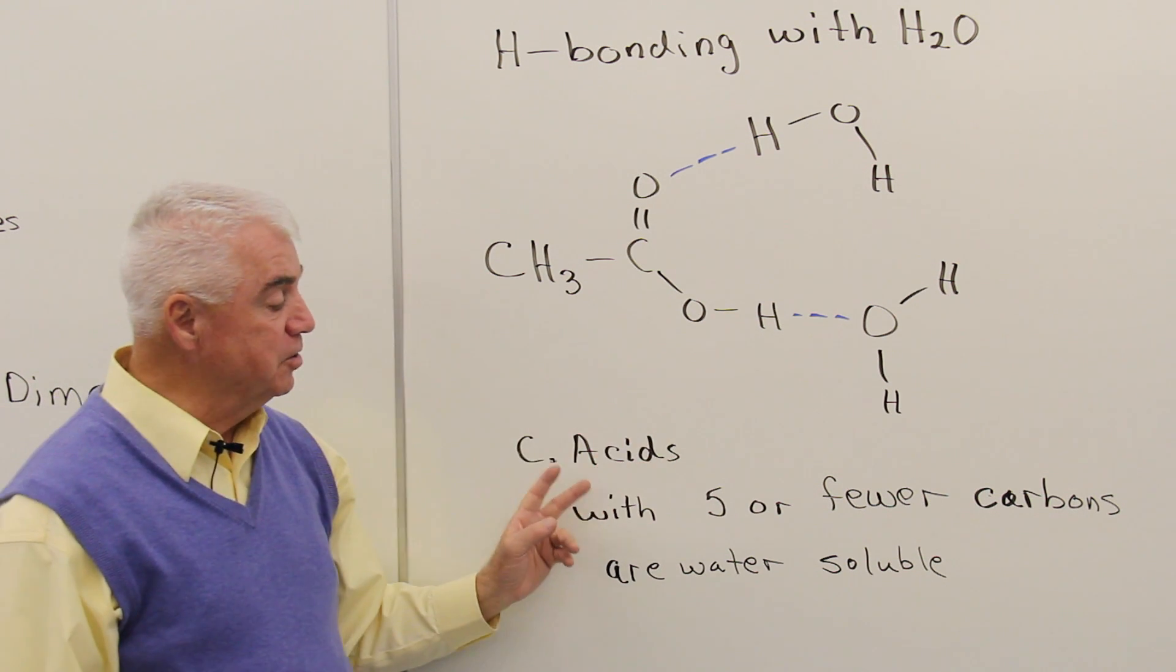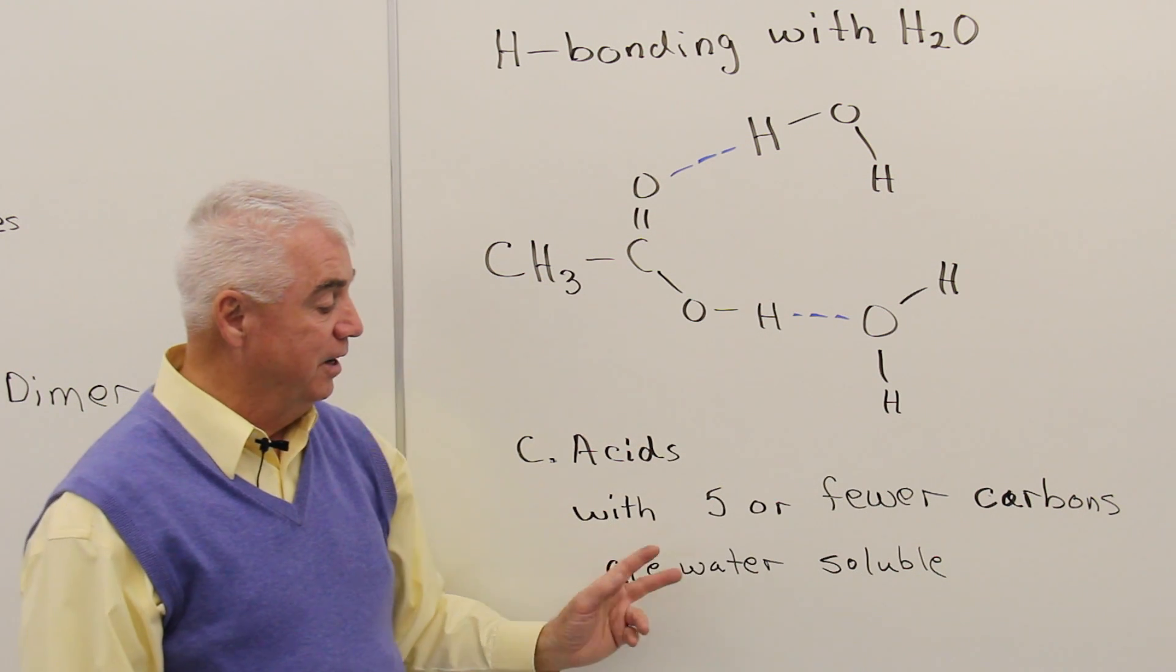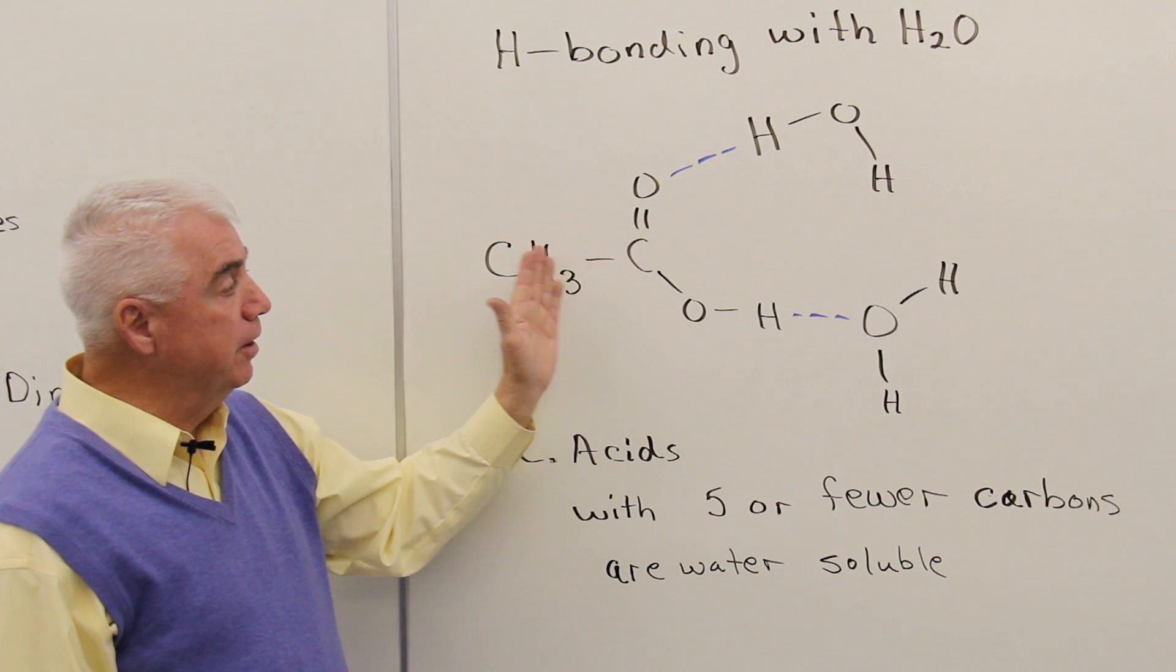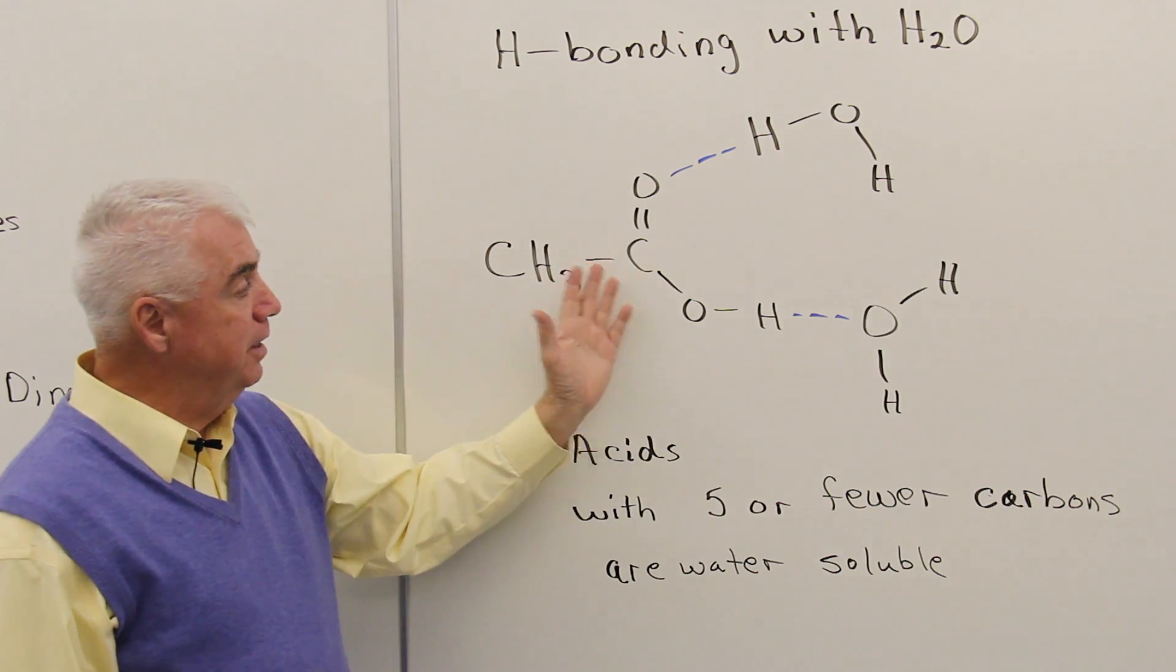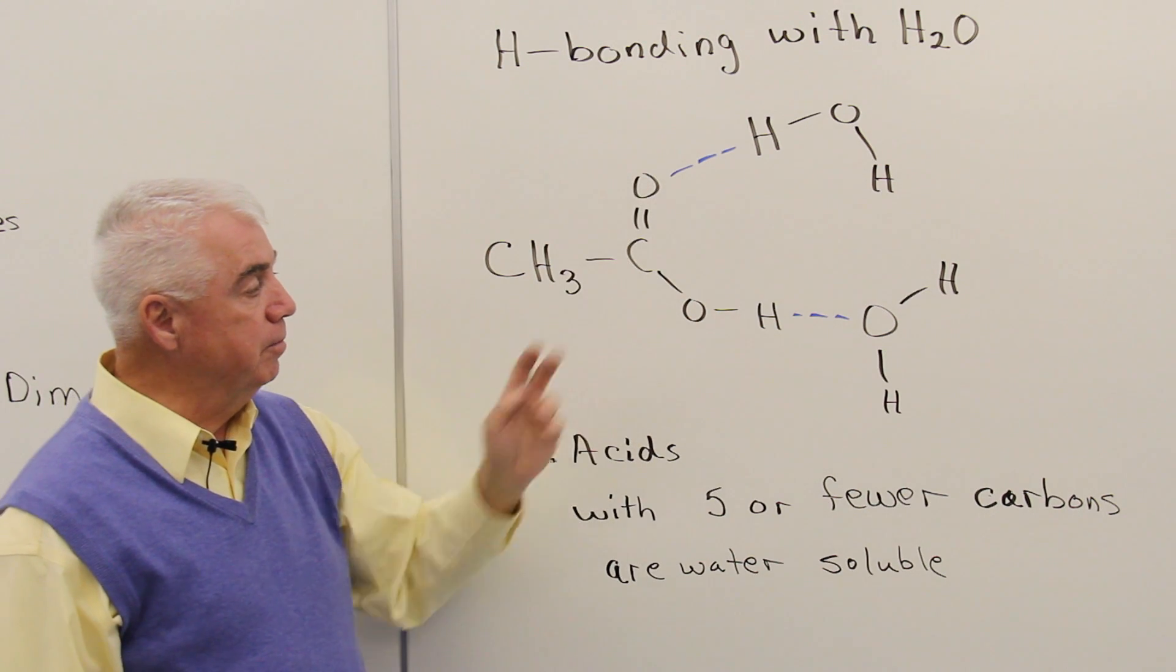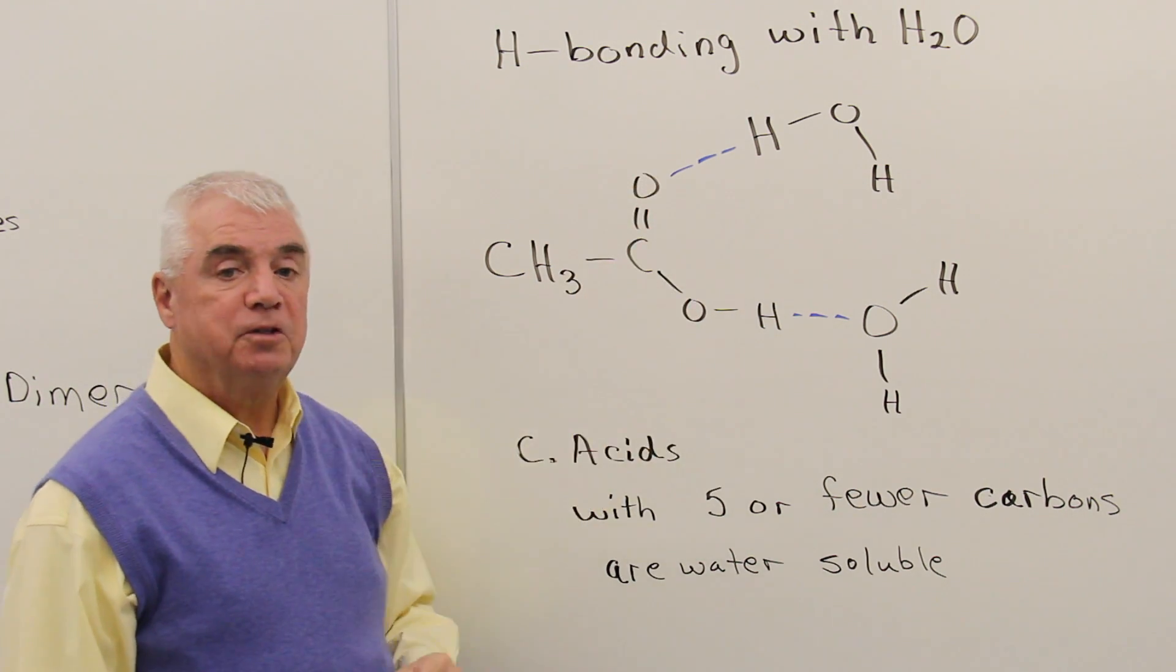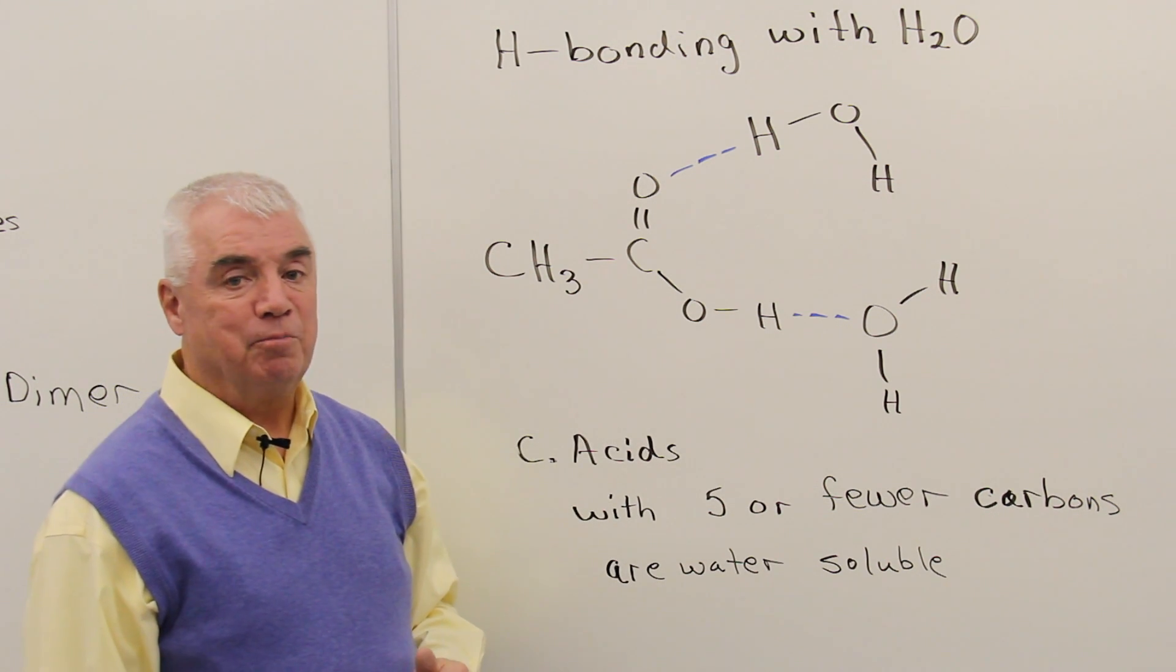So what we find is that carboxylic acids with five or fewer carbons are very soluble in water. If we were to lengthen that chain, beyond five carbons, then the impact of the hydrocarbon nature of the carboxylic acid starts to outweigh the impact of the two oxygens, and so we find that they're insoluble in water.